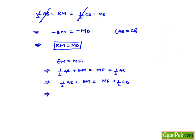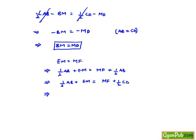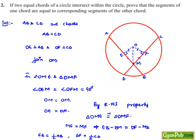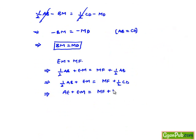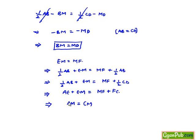That implies, here instead of half AB we can write the value as AE, since AE is equal to half AB. So AE plus EM is equal to MF plus half CD can be written as FC. Therefore, now again from figure we get AE plus EM is equal to AM, and MF plus FC is CM. Therefore, here we got AM is equal to CM.